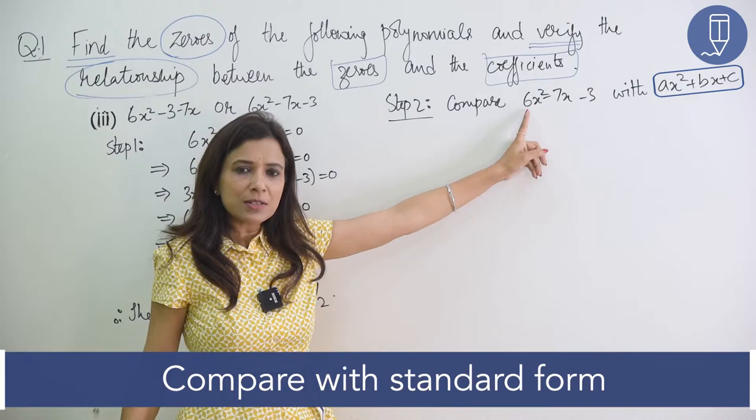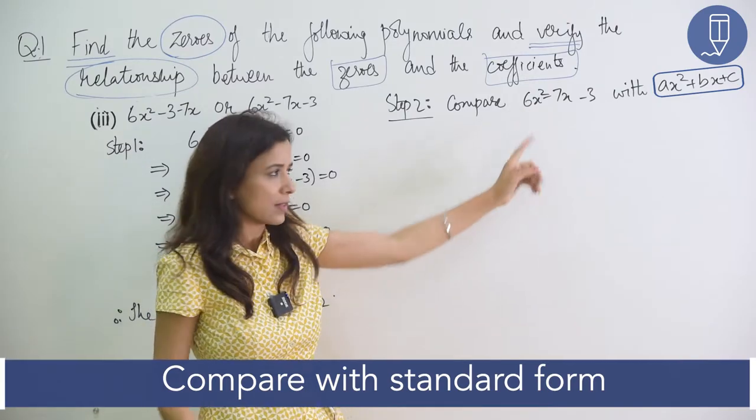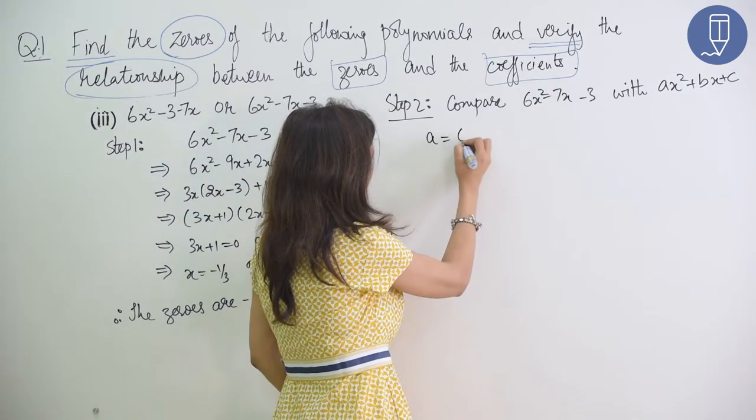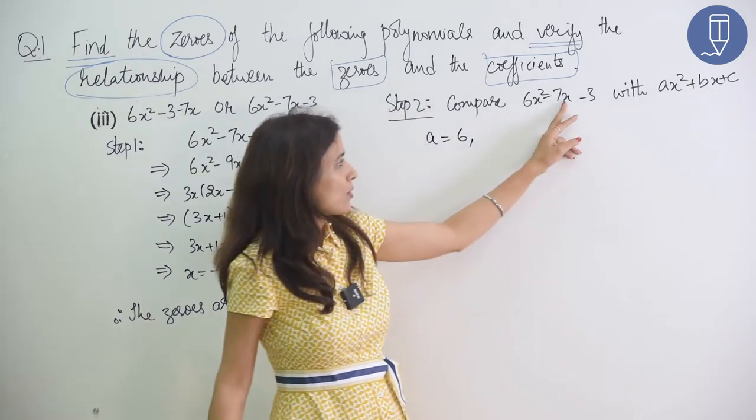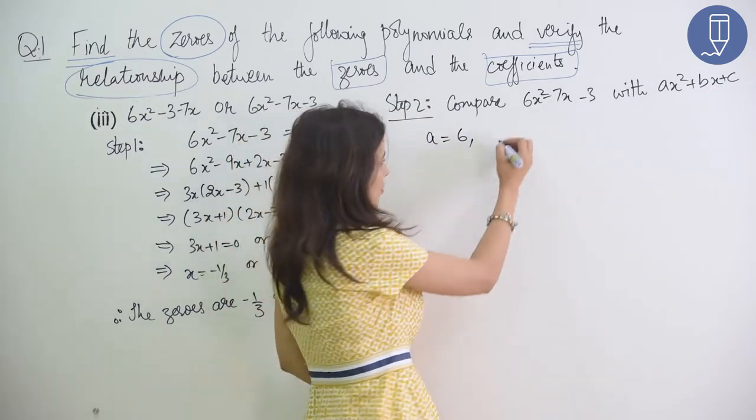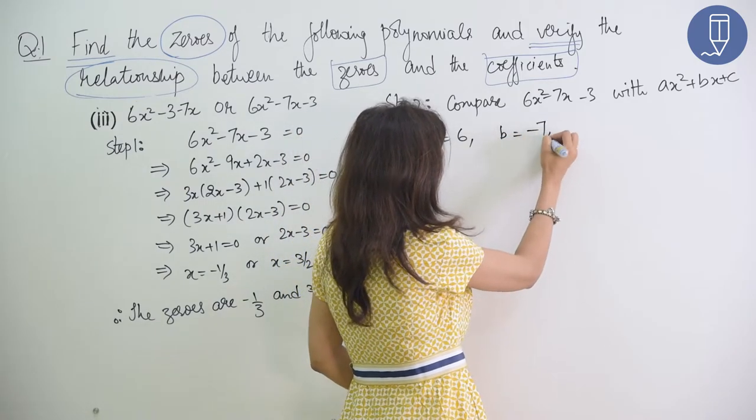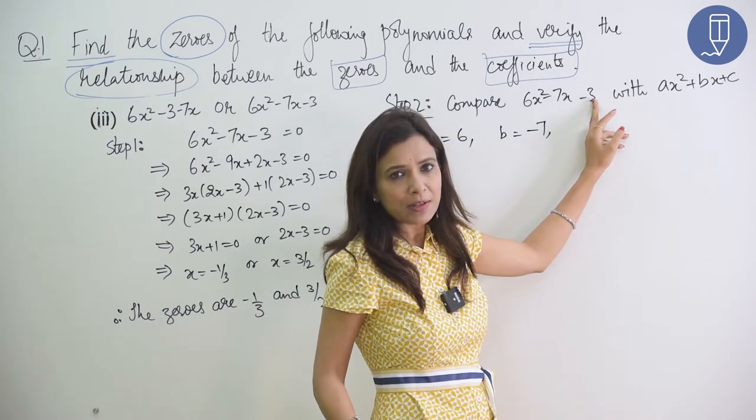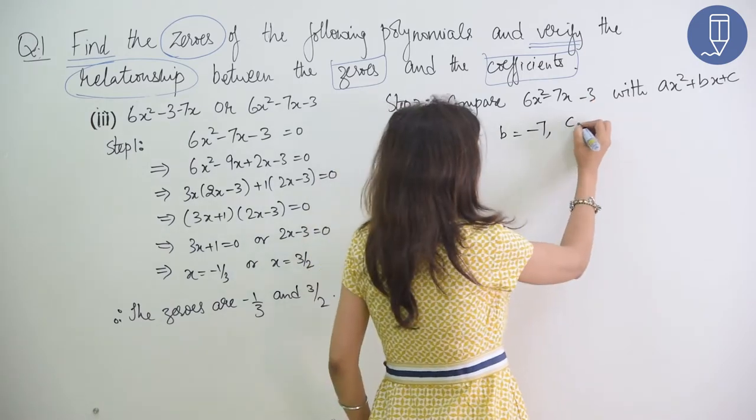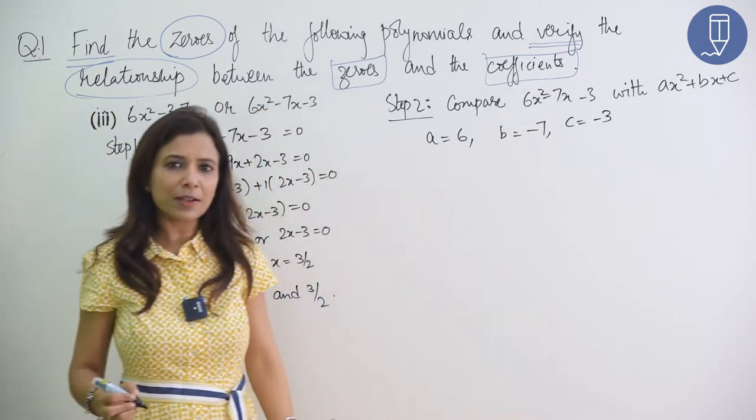x² coefficient is a. And here, x² coefficient is 6. So, a will be 6. x's coefficient is b. So, x's coefficient is minus 7. So, b's value is minus 7. We have constant in c. Here, constant in c is minus 3. We write c equal to minus 3. So, the coefficients are coming.